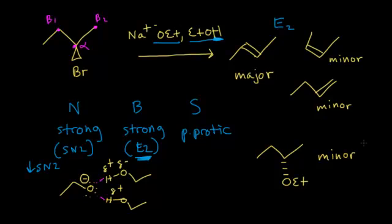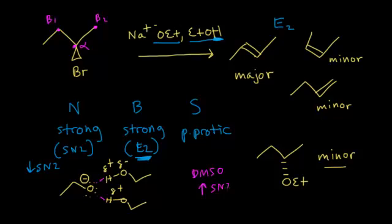If you want to increase the percentage of the SN2 product, you could change the solvent from a polar protic to a polar aprotic solvent like DMSO. That would increase the nucleophilic strength of the ethoxide anion and increase the amount of SN2 product.